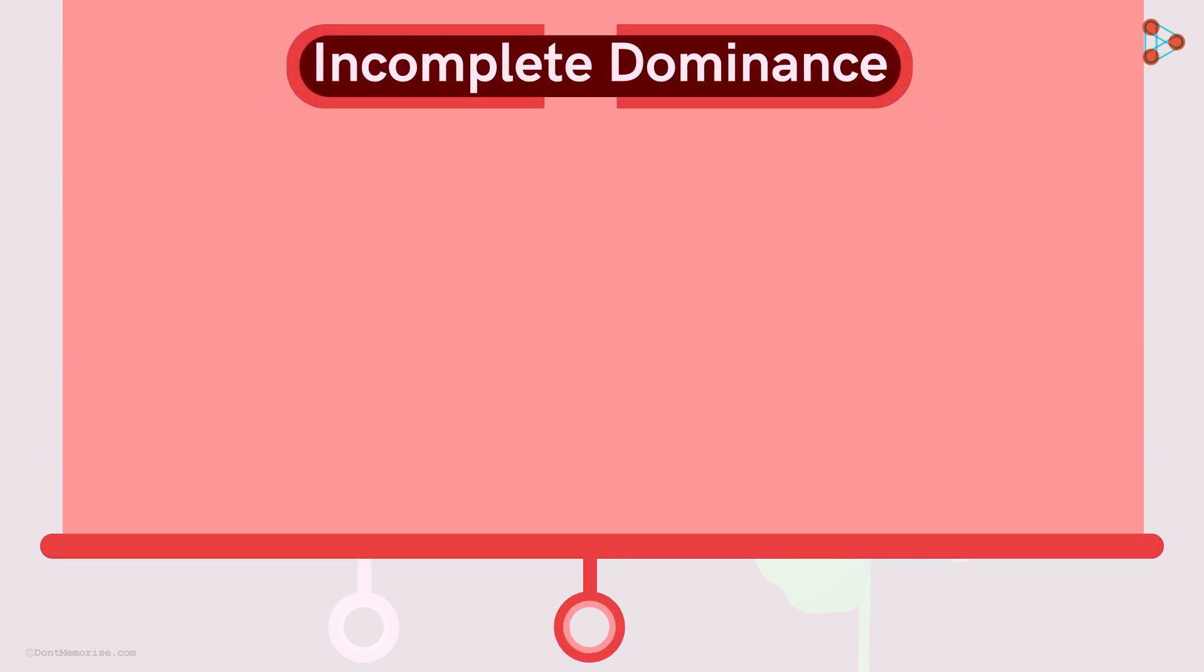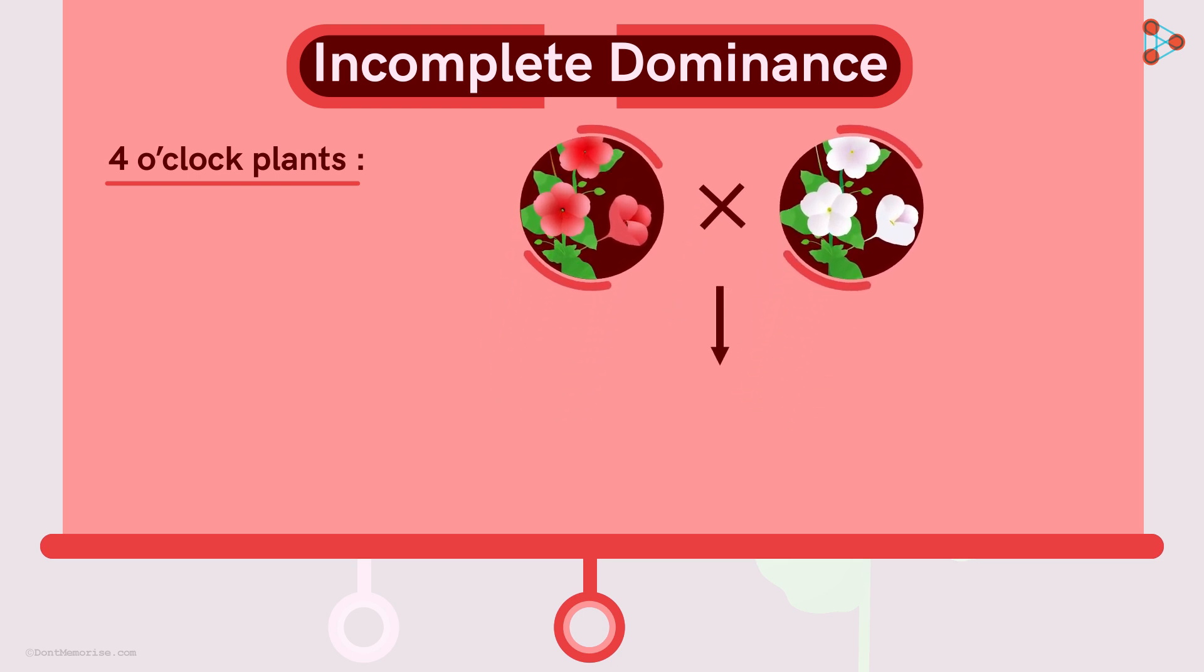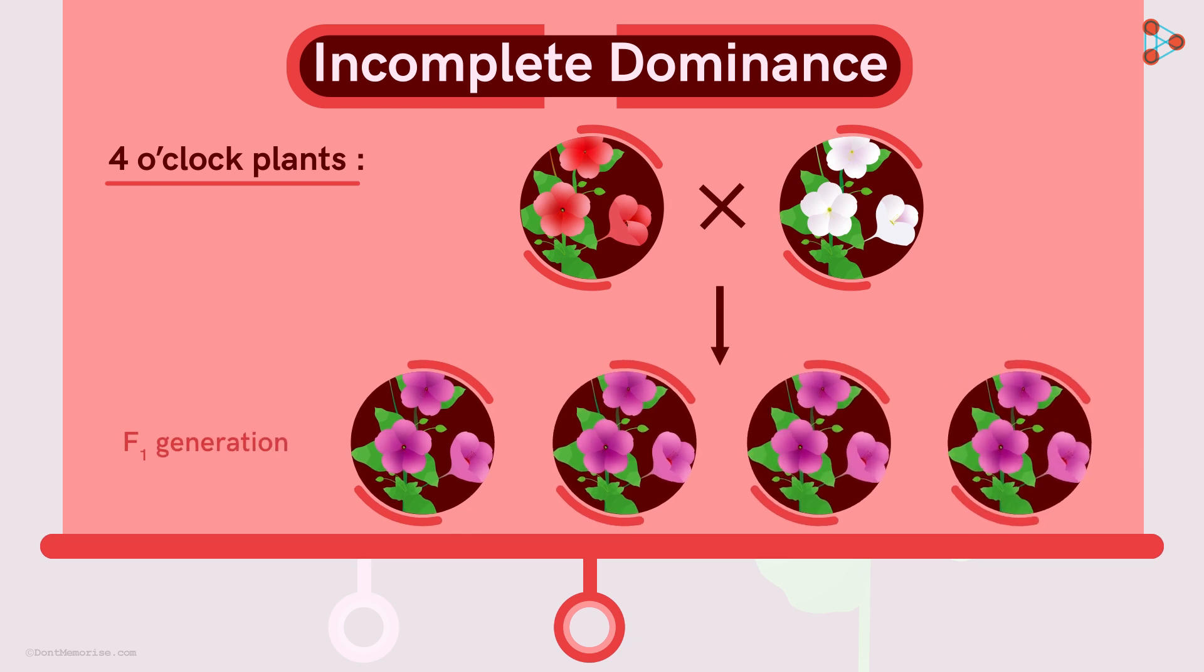So let's get back to our 4 o'clock plants to understand this. In this case, if a cross of homozygous red and white flowered plants is carried out, then the resultant offsprings are pink in colour. So the blend of red and white gives us a pink colour. This is because the dominant allele for the trait red does not completely mask the effect of the recessive allele for the trait white.